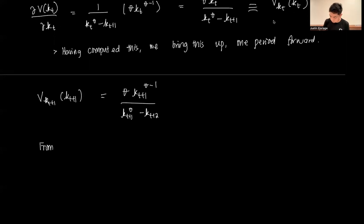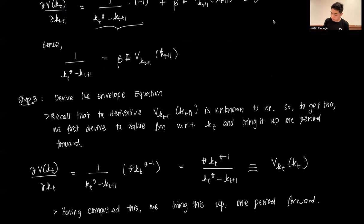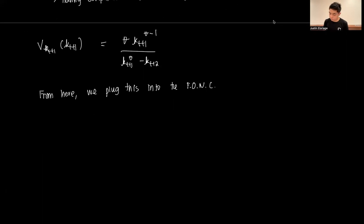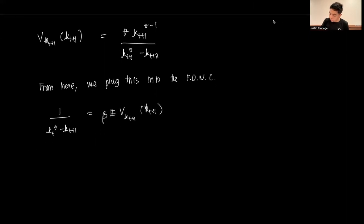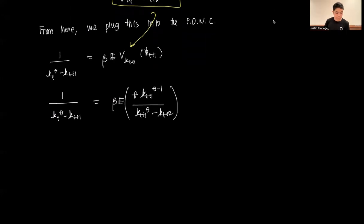Plugging the envelope result into the FONC, we get the Euler equation: 1/(k_t^θ − k_{t+1}) = β·E[ θ·k_{t+1}^{θ−1} / (k_{t+1}^θ − k_{t+2}) ]. This tells us that the marginal utility of an additional unit of consumption today equals the discounted expected marginal benefit of investing that unit as capital.